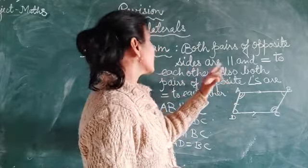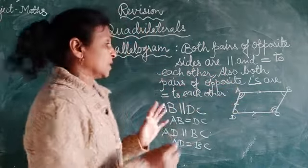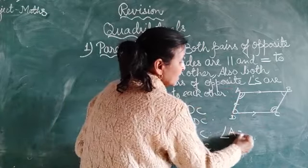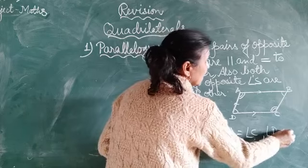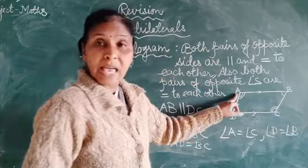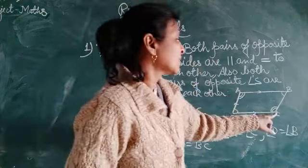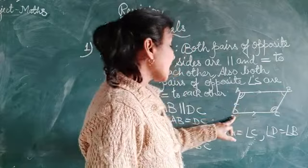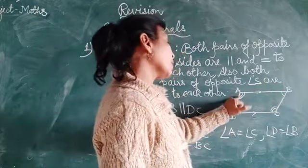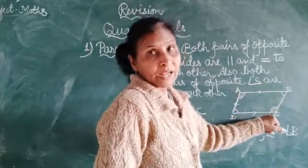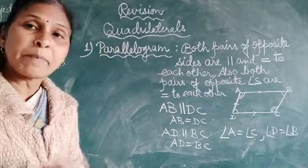Also, both pairs of opposite angles are equal to each other. We can say angle A is equal to angle C, and angle B is equal to angle D. This angle is opposite to this angle, and this angle is opposite to this angle. This is the definition of a parallelogram.